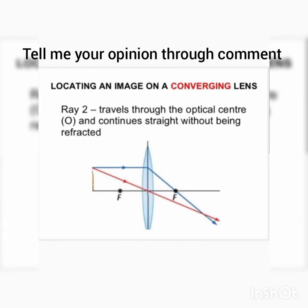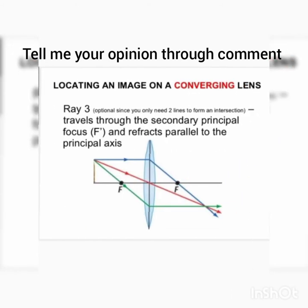Ray 2 travels through the optical center. When a ray passes through the optical center, there is no bending — it will follow a straight path directly through the lens.